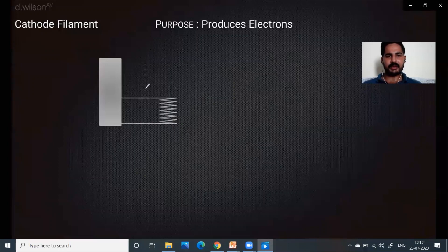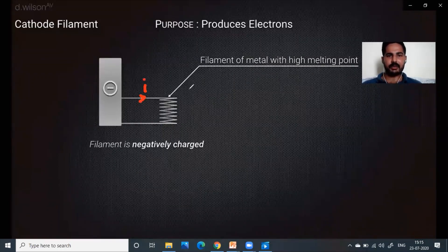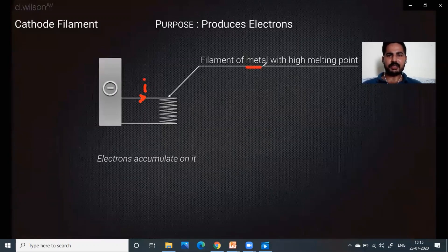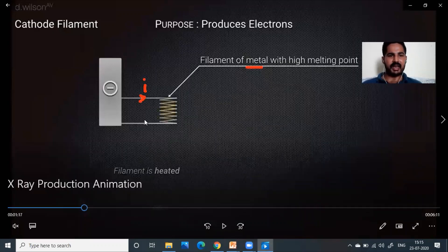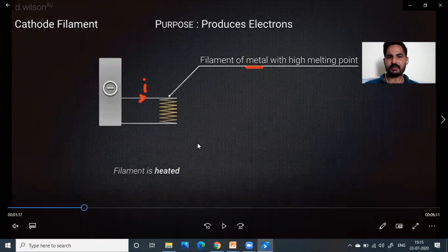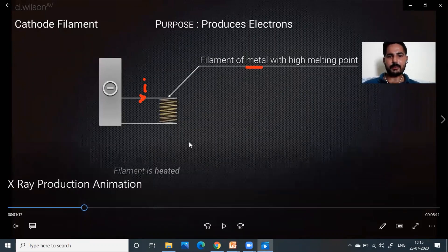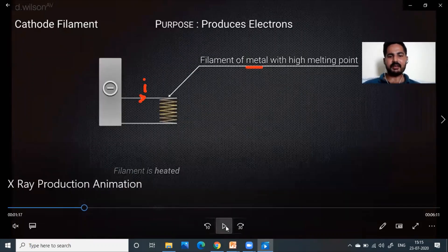Due to the heating effect of current, this filament is heated up. The metal of this filament is chosen such that it does not melt easily — its melting point should be high. It is a negatively charged filament so that there are sufficient electrons in it, and when these electrons get energy from heat they will come out of this filament.